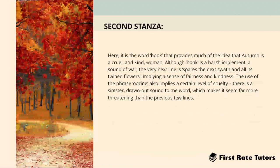In this stanza, it is the word 'hook' that provides much of the idea that autumn is a cruel yet kind woman. Although a hook is a harsh implement and a sound of war, the very next line — 'spares the next swath with all its twined flowers' — implies a sense of fairness and kindness. The use of the phrase 'oozing' also implies a certain level of cruelty, with a sinister, drawn-out sound that makes it seem far more threatening.